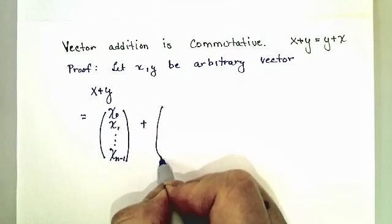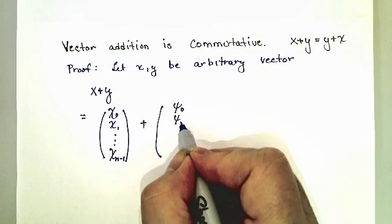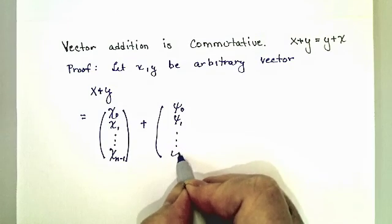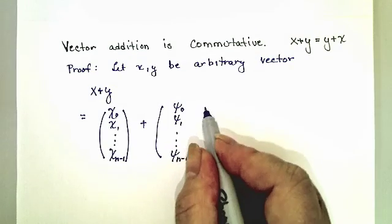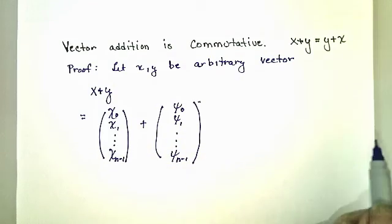And y will write as xi 0 out to chi n minus 1. They have to be the same size in order to perform this addition.